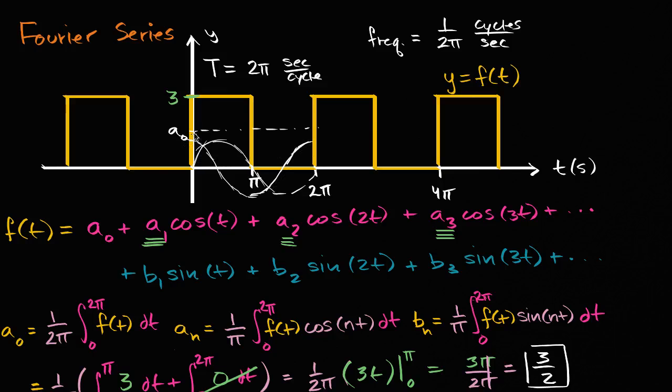And so cosine and multiples of cosine of t - cosine of 2t, cosine of 3t - are going to be out of phase, while the sine of t, sine 2t, sine 3t, are going to be more in phase with the way this function happens to be.